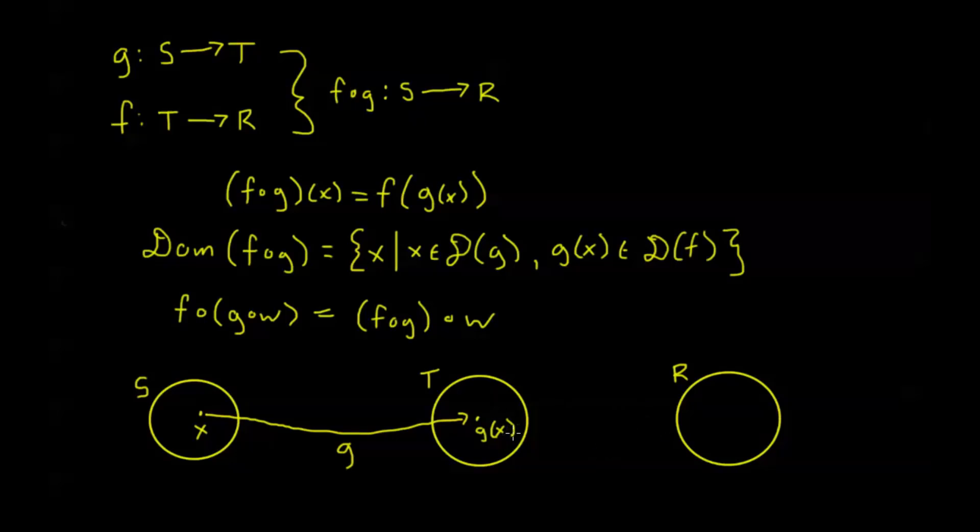Now, corresponding to g of x, because f is defined from T to R, I'm going to have some value over here that's the image of f on g of x. And I can go here from g of x, I can take my function f, and it's going to bring it over here and map this g of x straight to this image f of g of x.